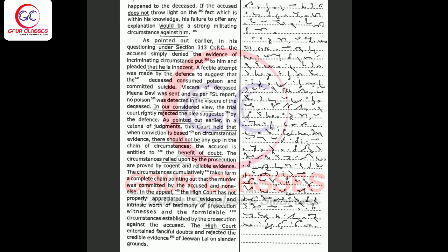As pointed out earlier, in a catena of judgments, this court held that when conviction is based on circumstantial evidence, there should not be any gap in the chain of circumstances, the accused is entitled to the benefit of doubt.